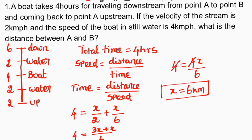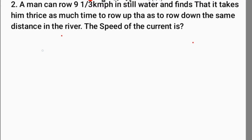This gives us the distance. Next problem: a man can row 9 and 1/3 kmph in still water and finds that it takes thrice as much time to row up as to row down the same distance in the river. Find the speed of the current.